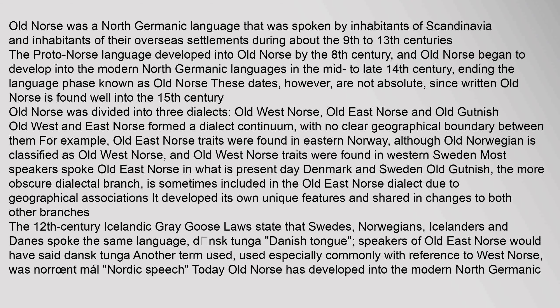Old East Norse, and Old Gutnish. Old West and East Norse formed a dialect continuum with no clear geographical boundary between them. For example, Old East Norse traits were found in Eastern Norway, although Old Norwegian is classified as Old West Norse, and Old West Norse traits were found in Western Sweden. Most speakers spoke Old East Norse in what is present-day Denmark and Sweden. Old Gutnish, the more obscure dialectal branch, is sometimes included in the Old East Norse dialect due to geographical associations. It developed its own unique features and shared changes with both other branches. The 12th century Icelandic Grey Goose laws state that Swedes, Norwegians, Icelanders and Danes spoke the same language, Dansk Tunga, meaning Danish tongue. Another term used, especially commonly with reference to West Norse, was Noroent Mal, meaning Nordic speech.